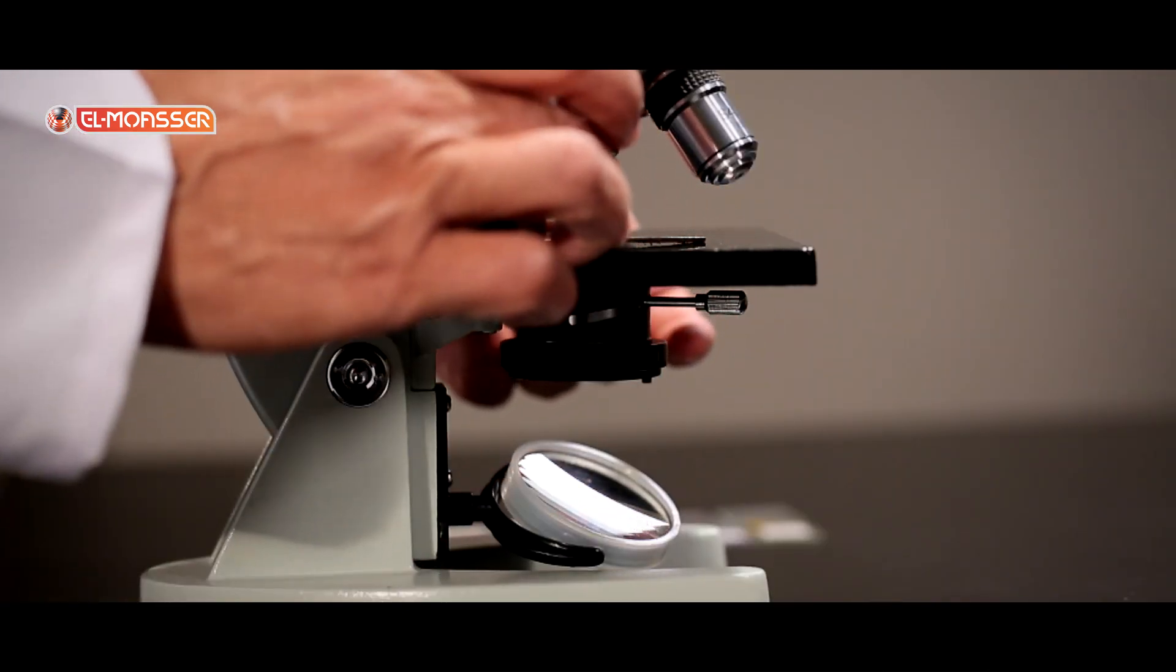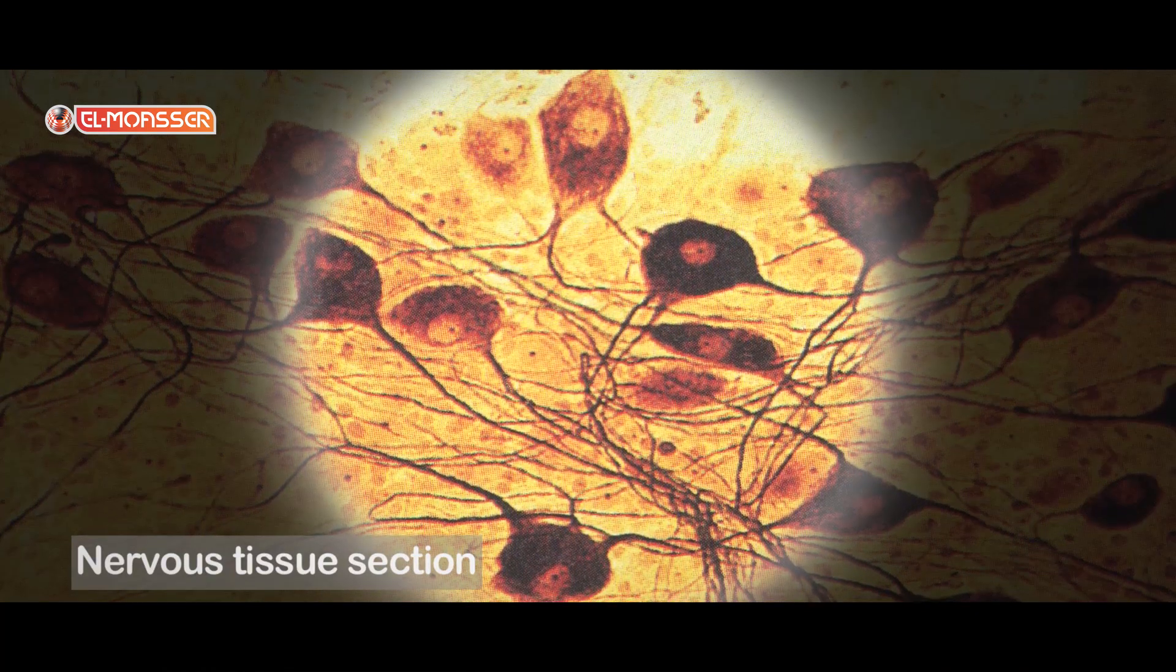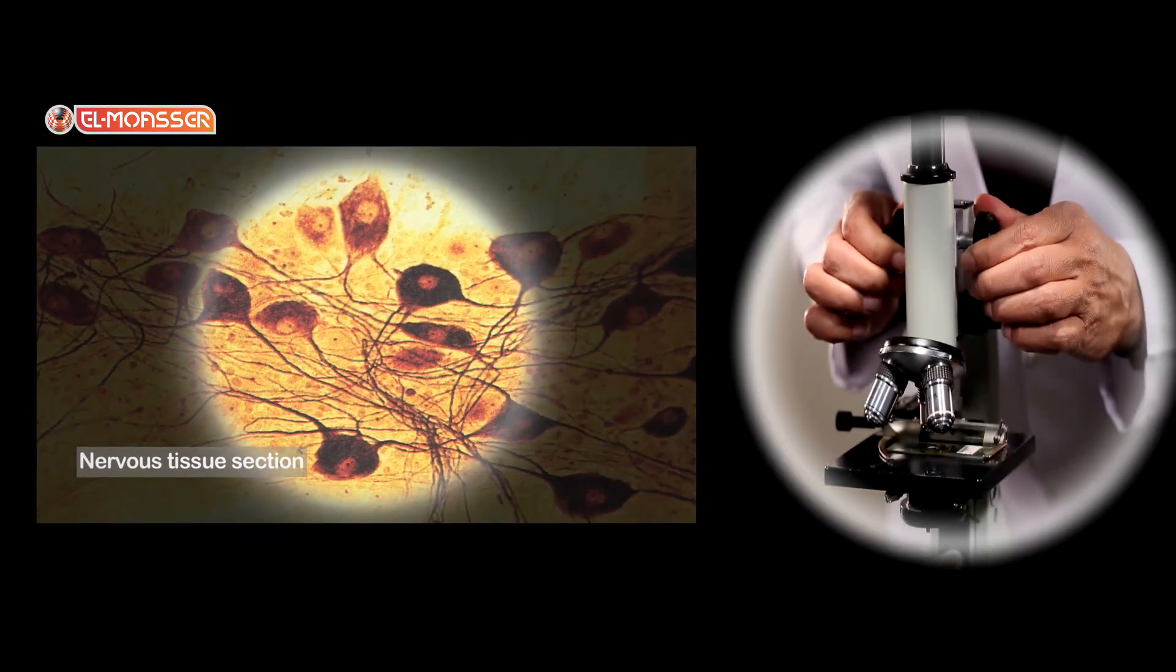Place the sixth slide on the stage. It is a nervous tissue section. The nervous tissue consists of branched nerve cells.